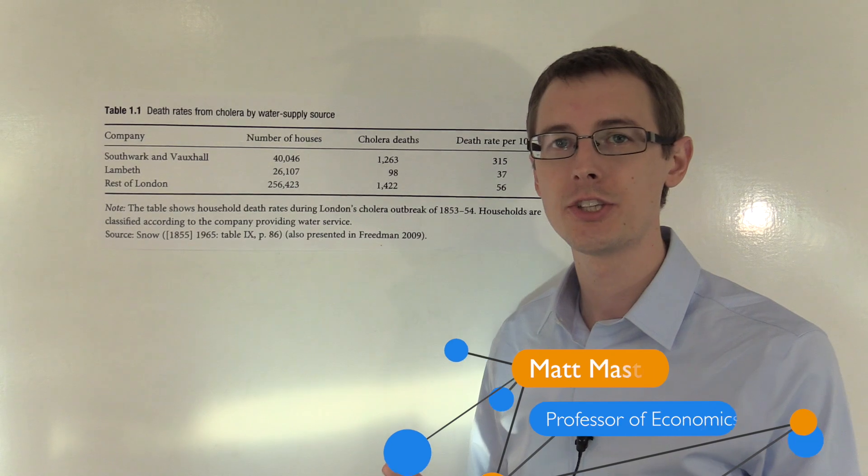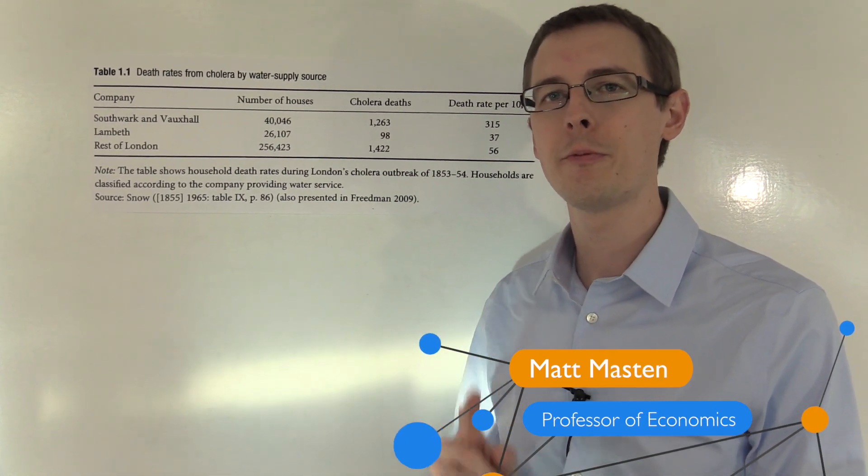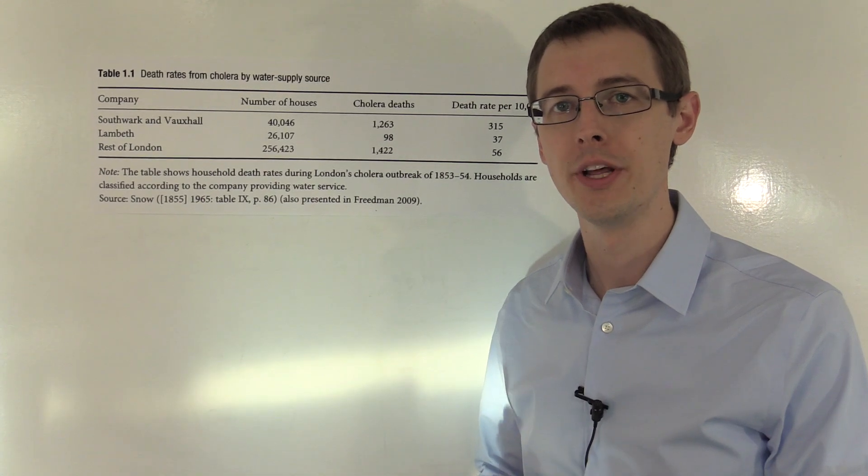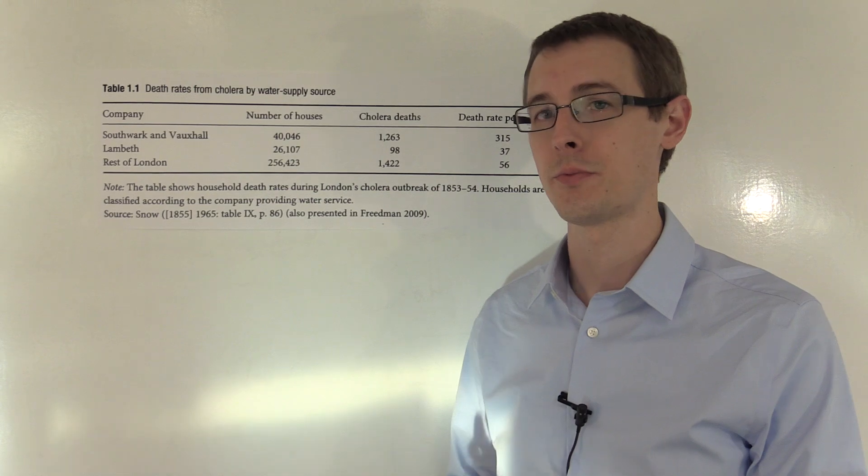In addition to the map that John Snow drew showing the deaths of cholera around Broad Street, he had one other piece of evidence that he used to conclude that cholera is being spread through contaminated water. He had a really nice natural experiment.